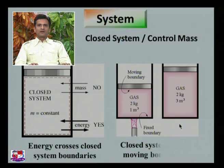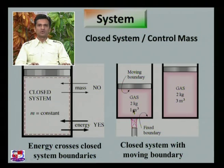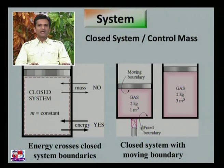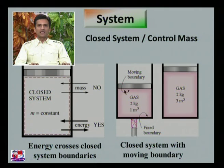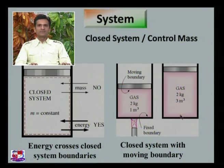The boundary of a closed system may be fixed or moving. For example, consider a gas of two kilograms in a volume of one cubic meter with a moving boundary. If heat is supplied, the gas is heated and its volume increases — the moving boundary moves as the volume expands from one cubic meter to three cubic meters. The mass remains constant at two kilograms while the volume increases, making this a control mass example — a closed system with a moving boundary. There is also the example of a closed system with a stationary boundary.